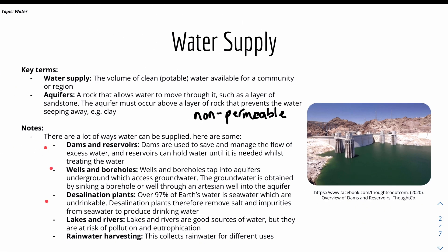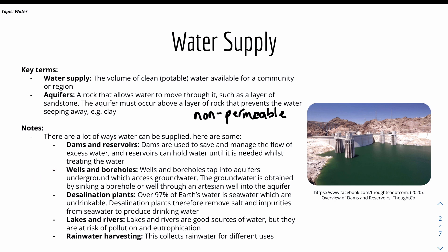There are different ways that water can be supplied. For example, via dams and reservoirs. There could also be wells and boreholes where they tap into aquifers to obtain water. There's also desalination plants, which basically turn seawater into drinkable water by removing salt and impurities from the seawater.